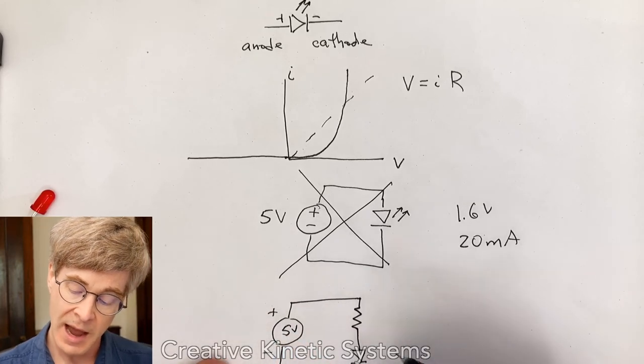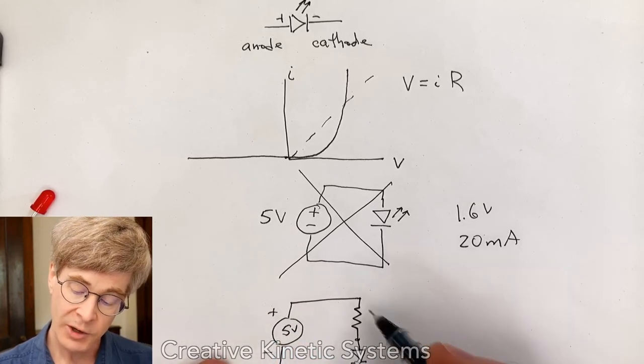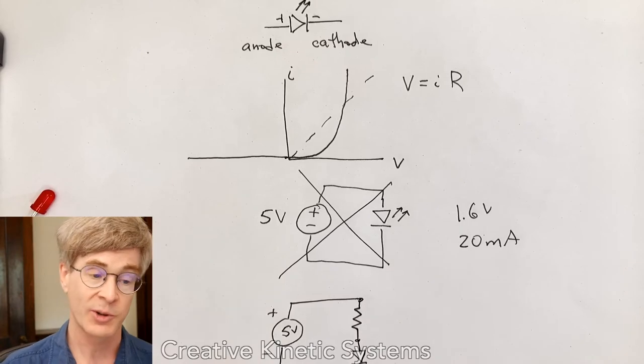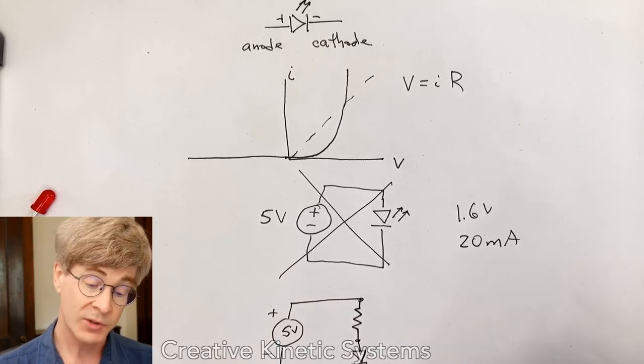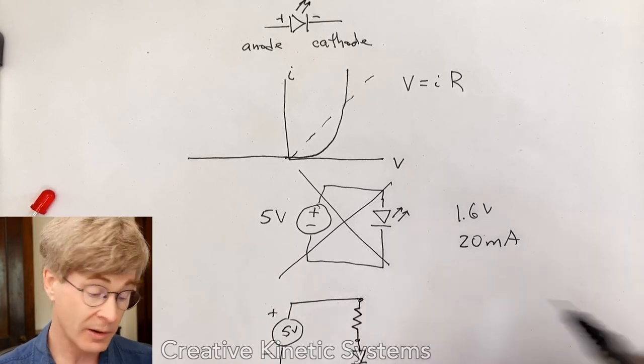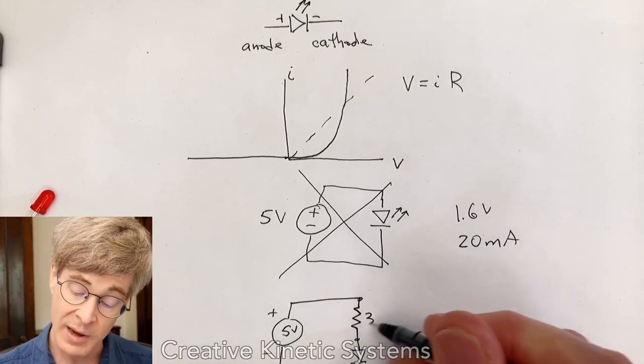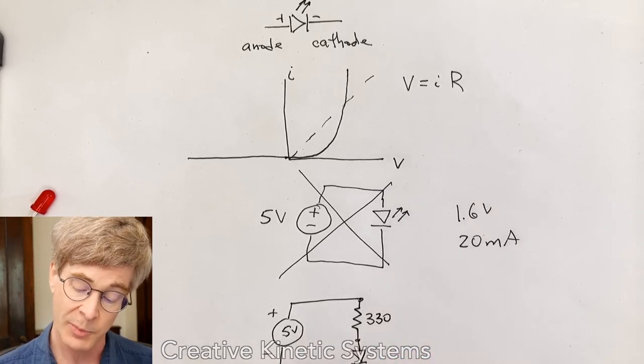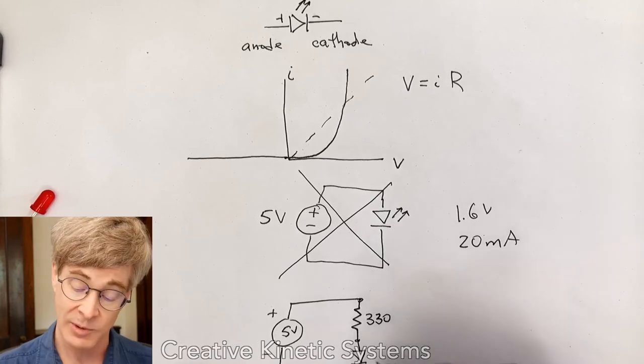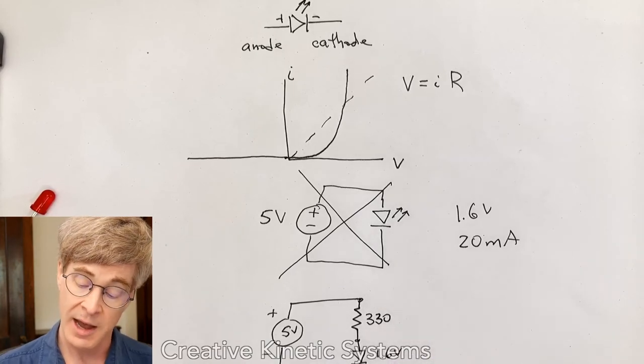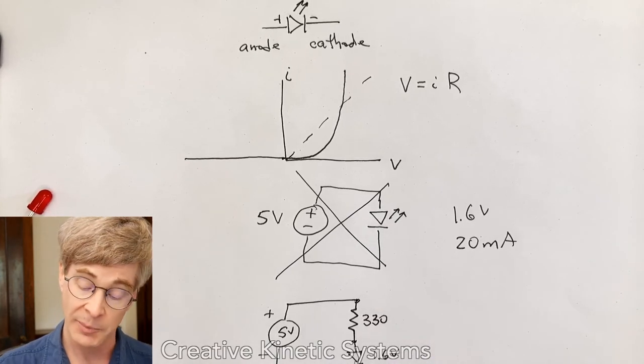Then current can flow through the LED, but the properties of the circuit will change. So let's just, just for argument's sake, let's pick a value here. I'm going to say 330 ohms, because that would be typical for this arrangement. And let's say it's a red LED with that 1.6 volt drop in a kind of typical operating point.